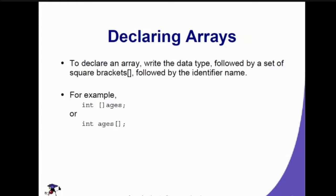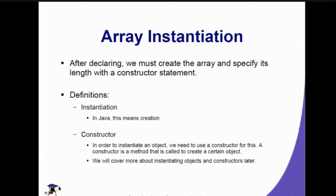To declare an array, we simply type the data type — for example, integer — followed by the variable name, followed by square brackets. The square brackets can be placed before or after the variable name, or after the data type declaration. So the square brackets can go after int, after the variable name ages, or even before — any of those positions is valid.